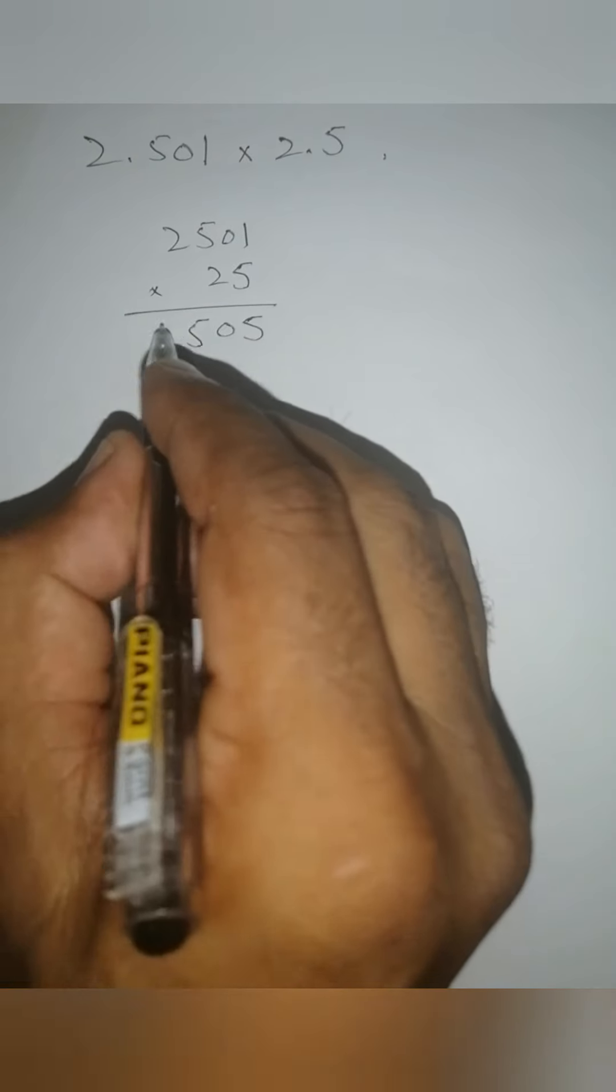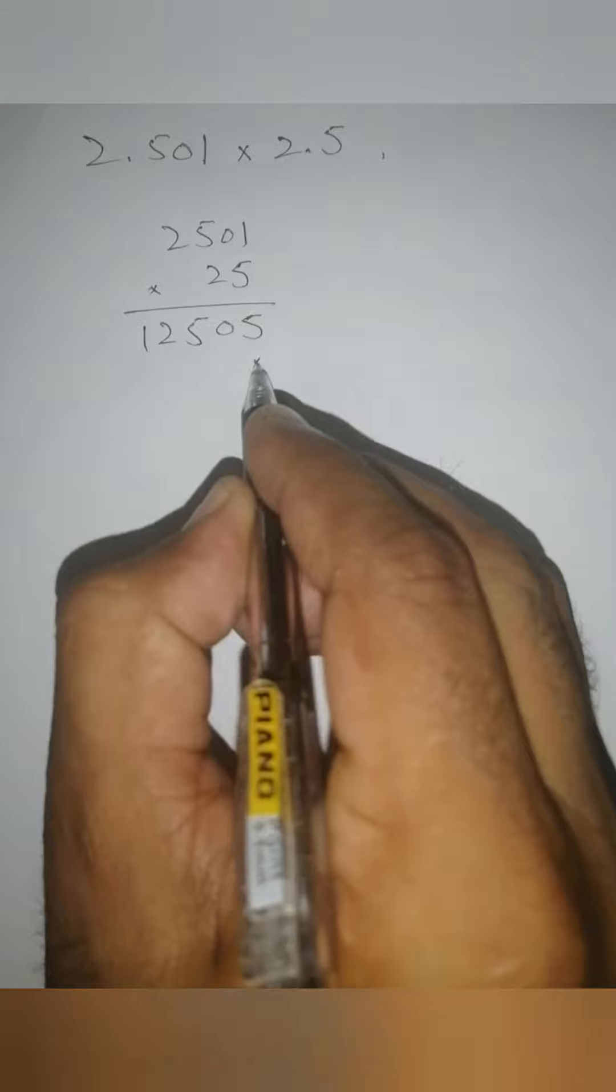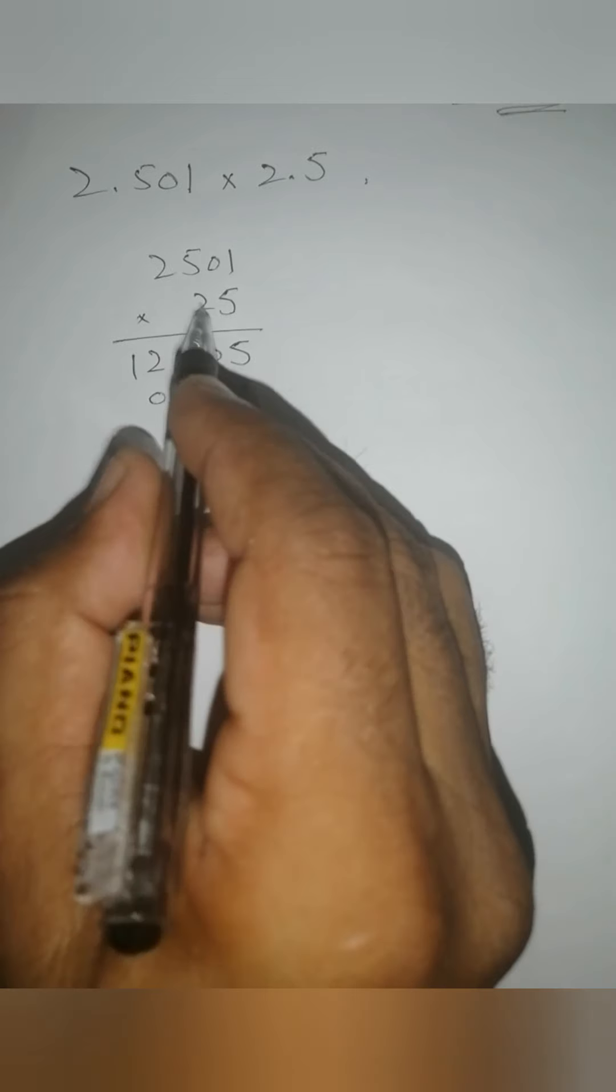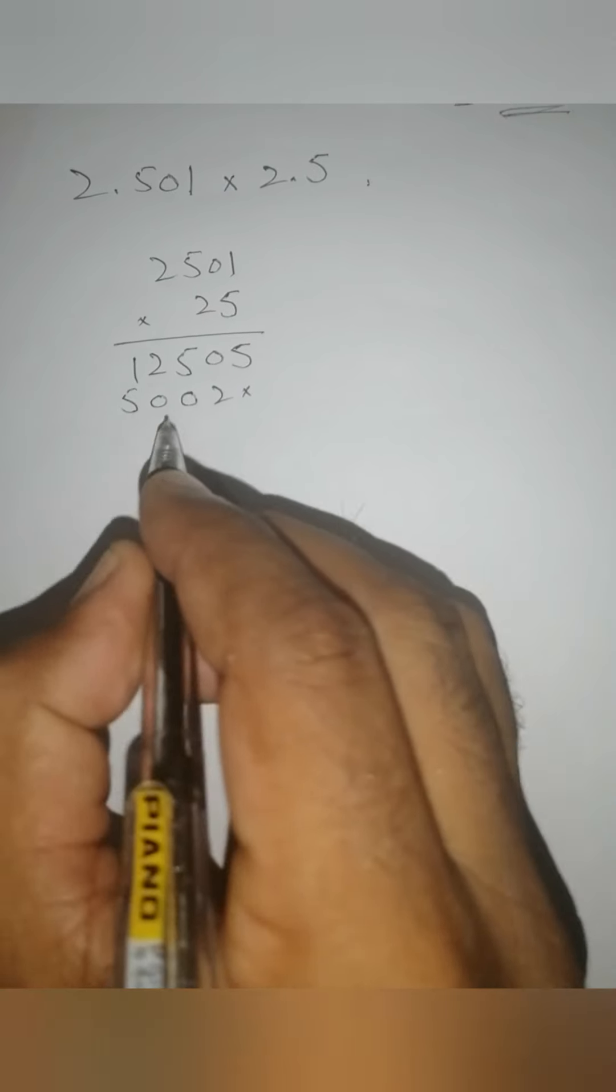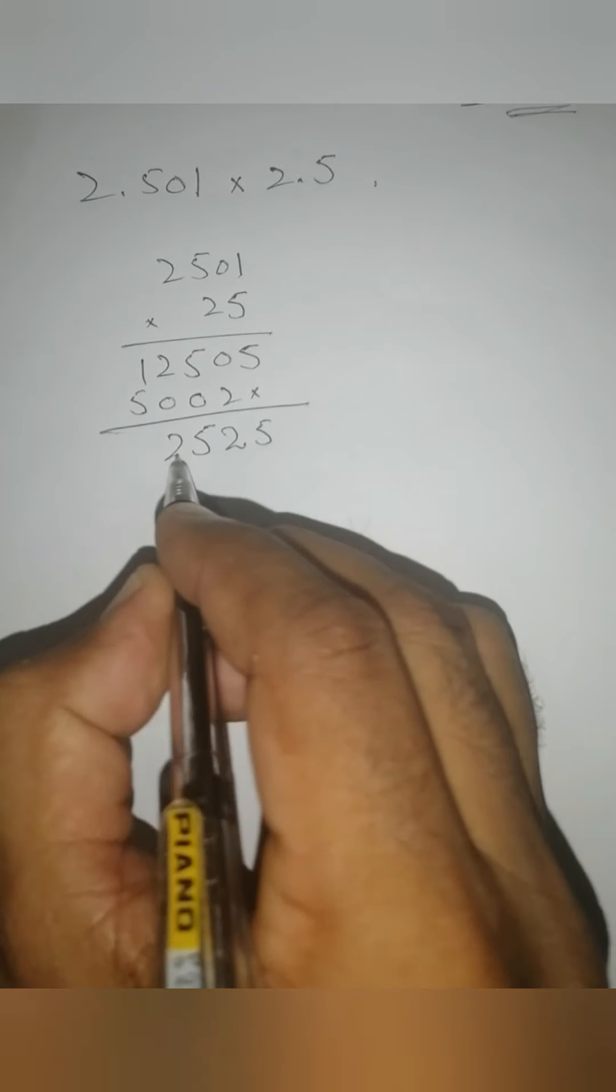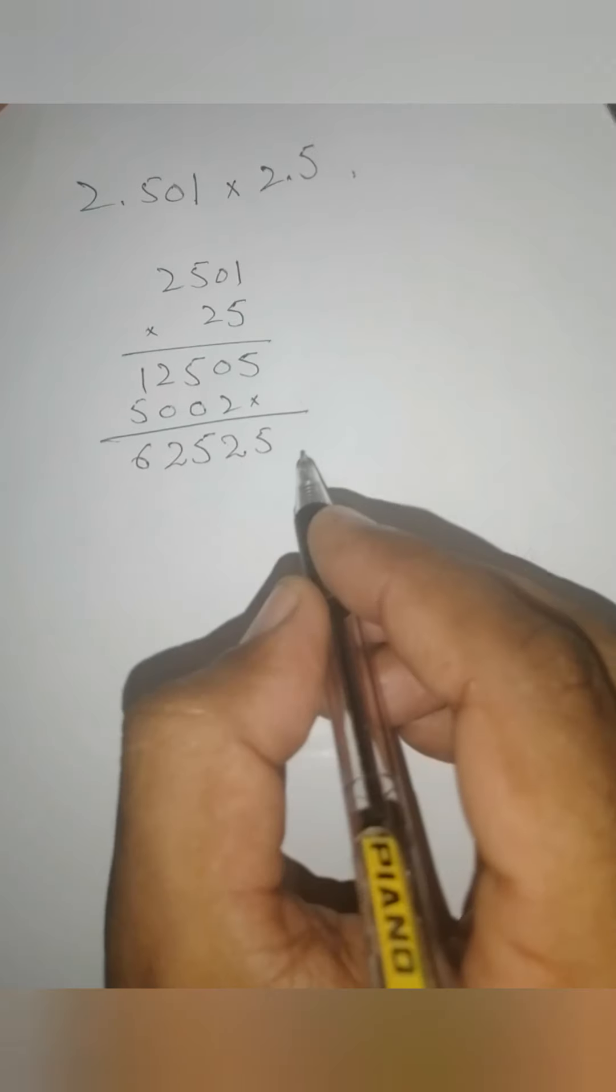Then zero. Five times 5 is 25, two remainder. Five times 2 is 10 plus 2 is 12. Then 2 times: two times 1 is 2, zero, two times 5 is 10, one remainder. Two times 2 is 4 plus 1 is 5. And finally, add these two. This is 5, this is 2, 5, 2, and 6. At the end, one step you have to do.